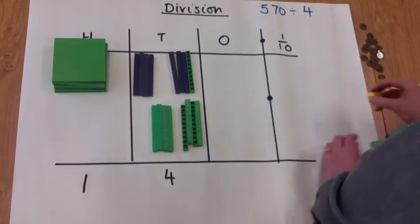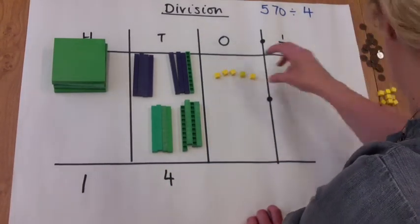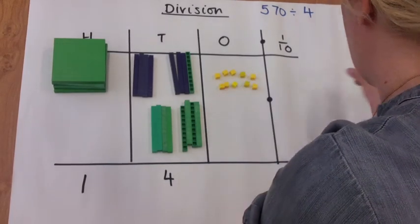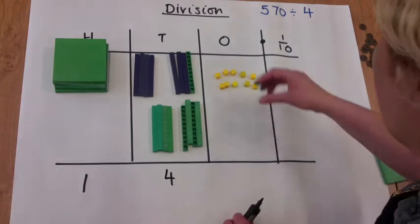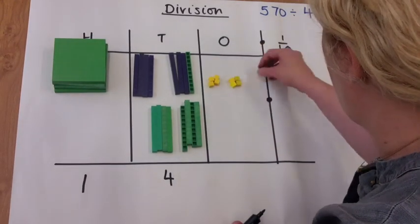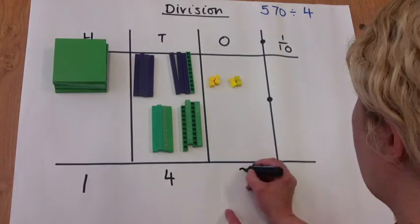So we're regrouping that again now into the ones column. It's 10 ones. Now looking for the groups of 4. We'll have 2 with a remainder of 2.